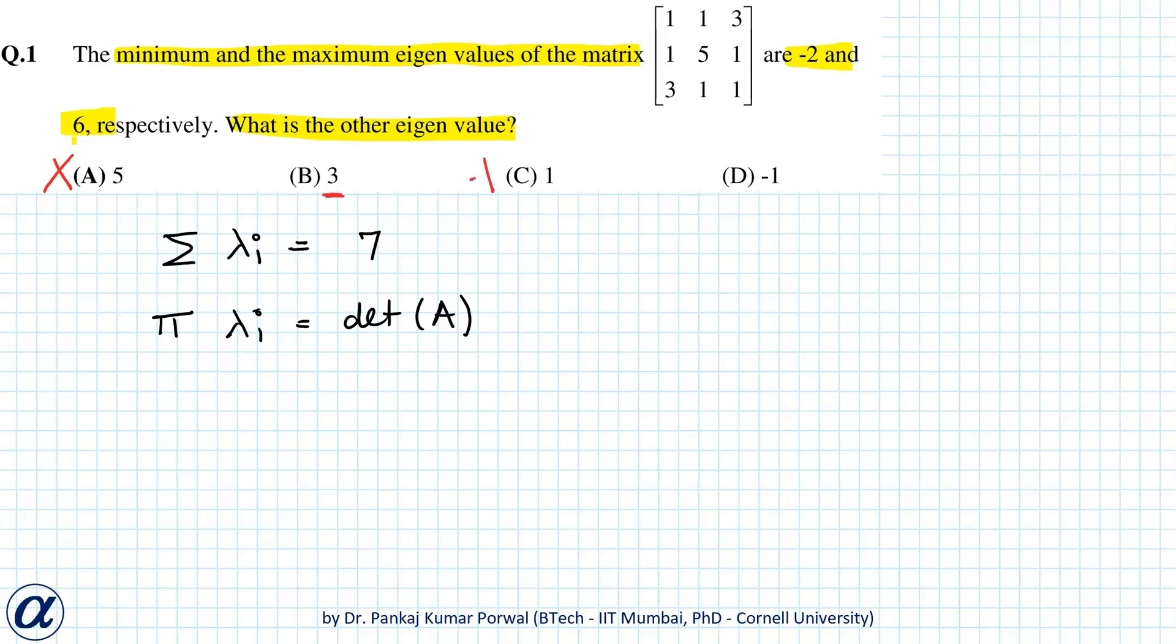C is not possible because it will give sum 5, and D is also not possible because it will give sum 3. So the only possible choice is B and that should be correct.